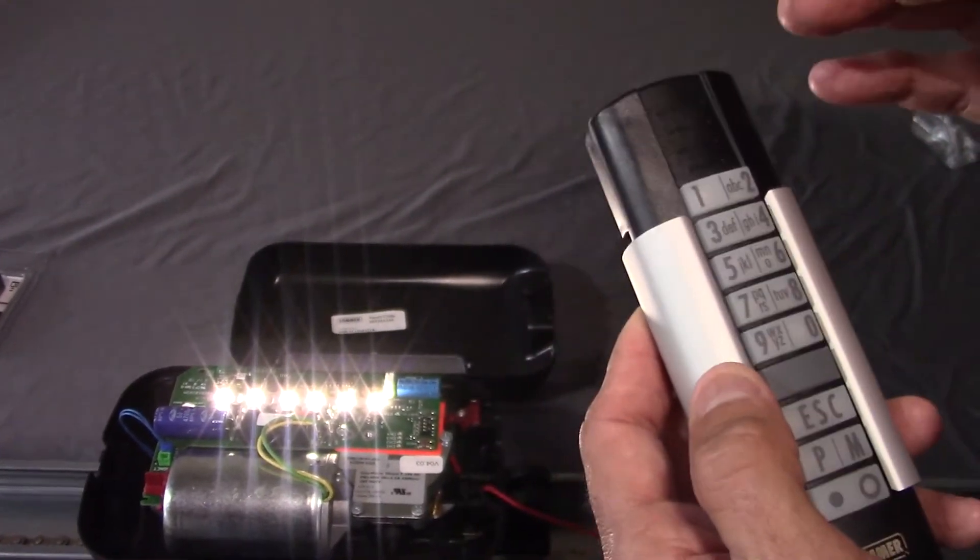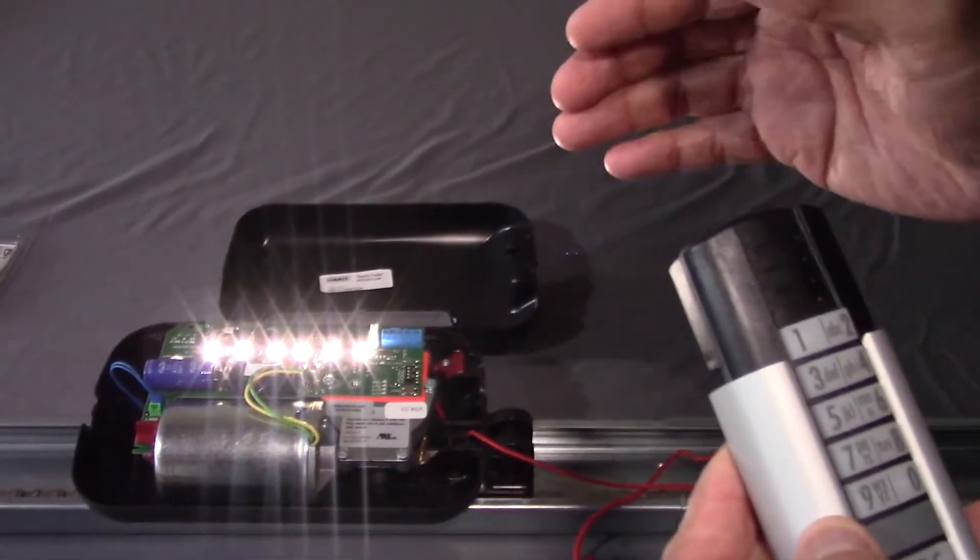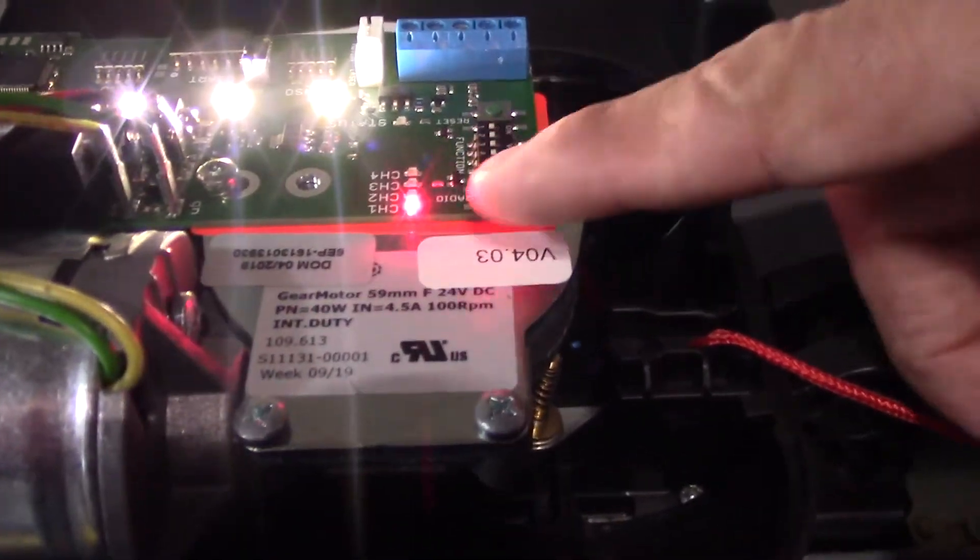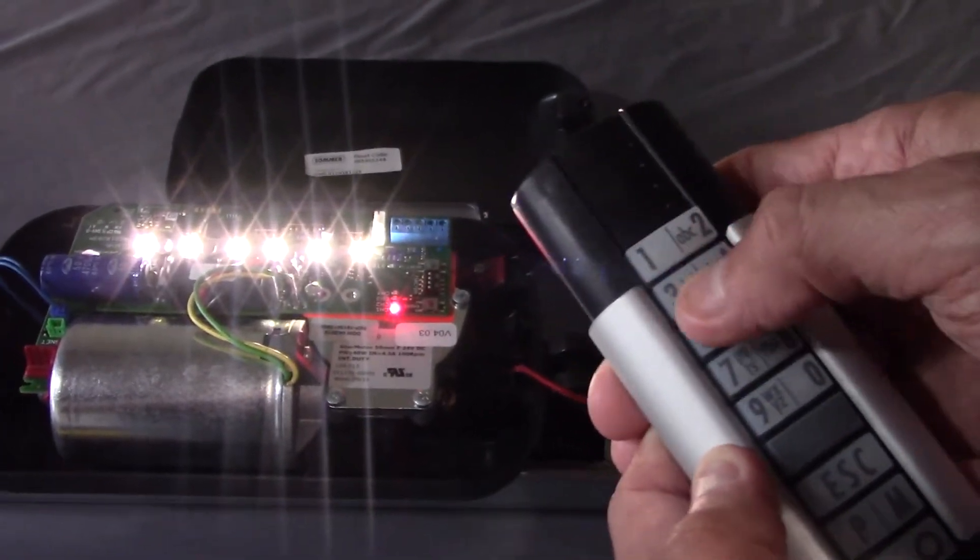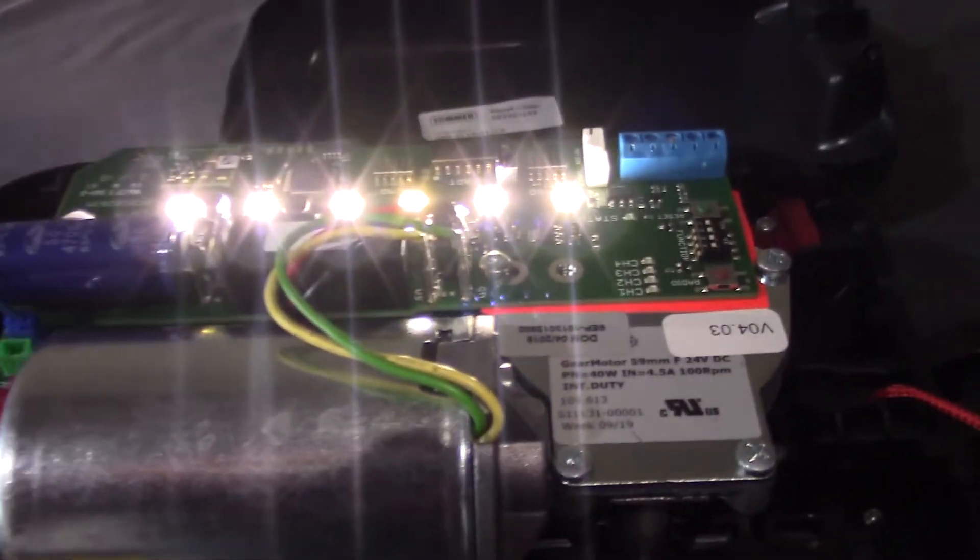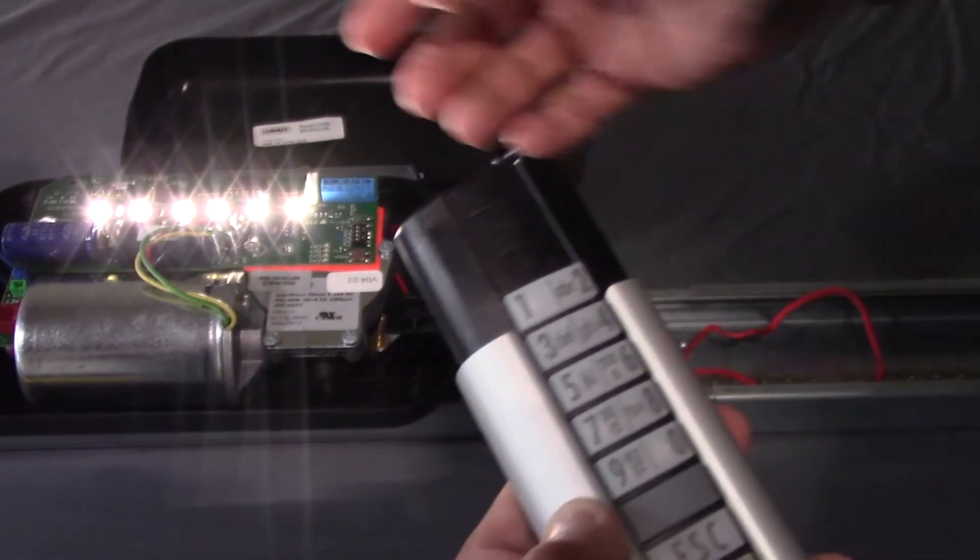Now you need to program the keypad to the opener. For that, go to the carriage and press the red radio button to channel one. Then press the code only—1234—and you'll see the LED turn off. That means the keypad has been properly programmed to the opener.